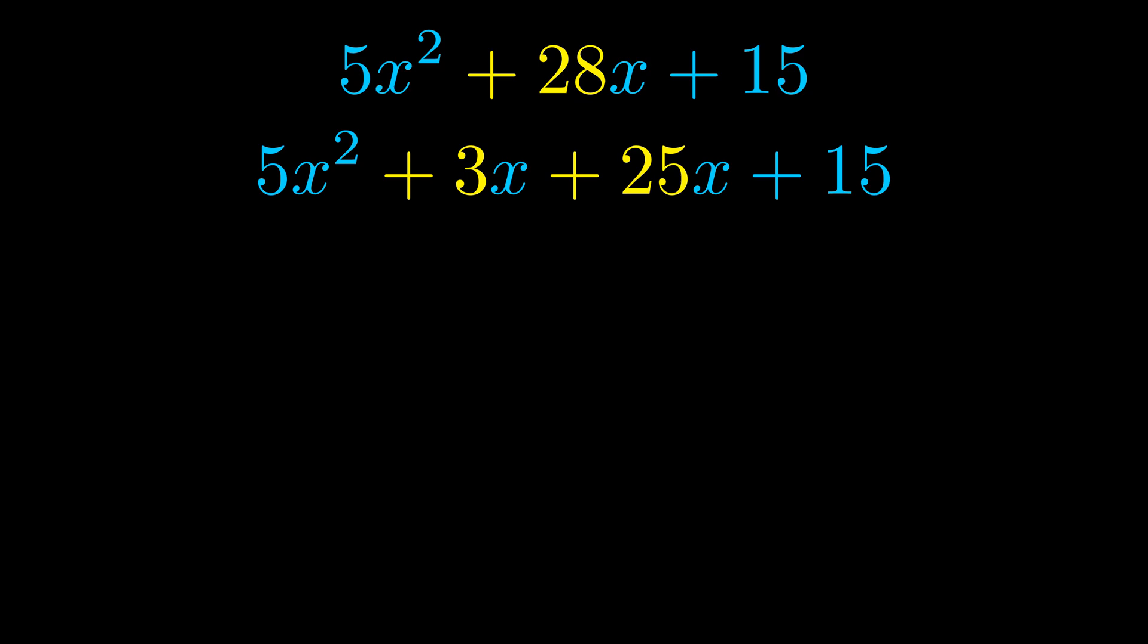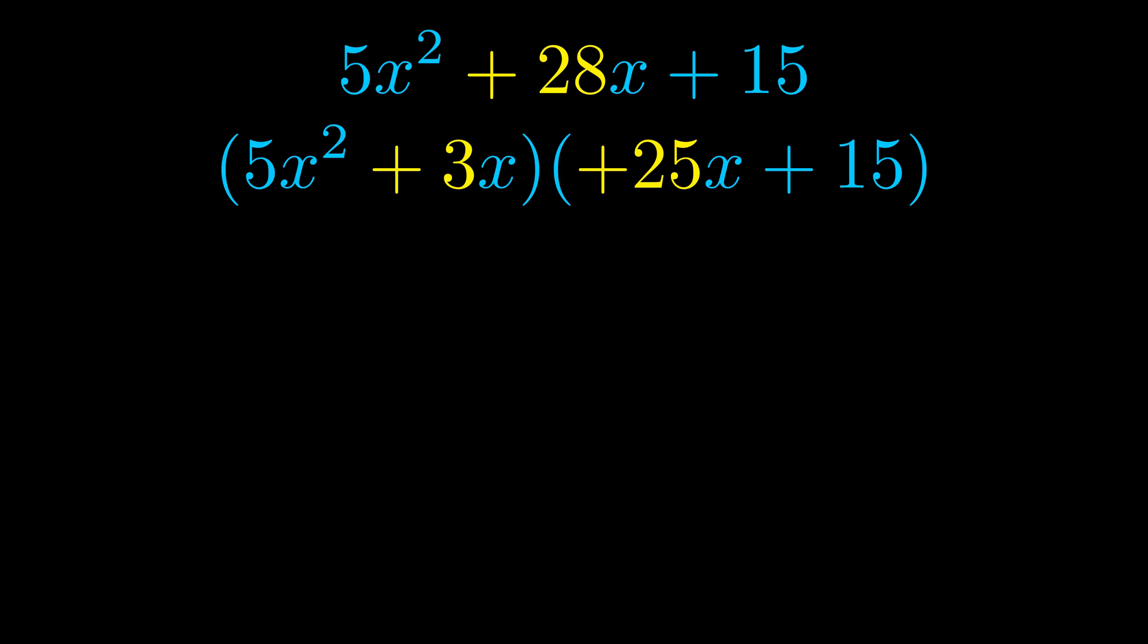Once we've done this, we go ahead and we put parentheses around the first term and the last term, and we do that so that we can take the greatest common factor out of both terms. We can see the greatest common factor is now outside in green.